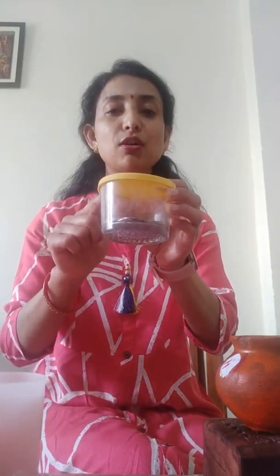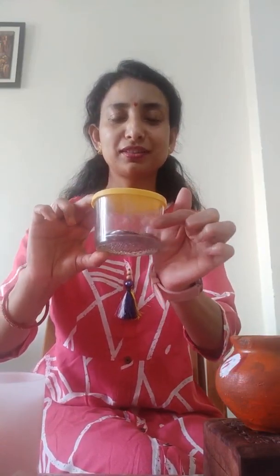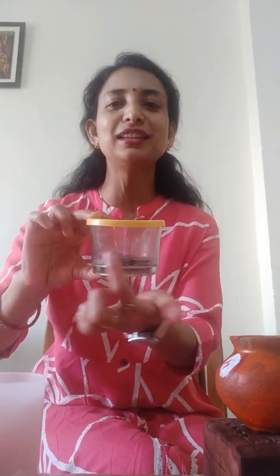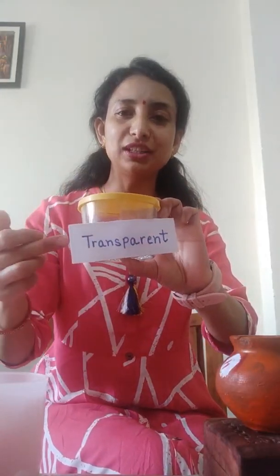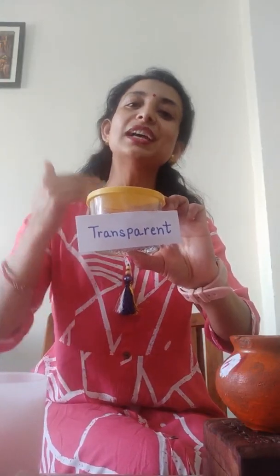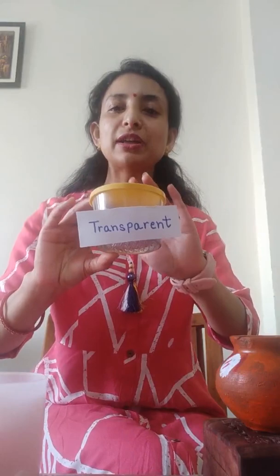Now I'm going to take another object — my glass box. I think you are able to see the coins inside this box. That means light can easily pass through it and you are able to see the coin. Or, taking my artificial candle and keeping it behind, you are able to see the candlelight passing through it. So such objects through which light can easily pass are called transparent objects.